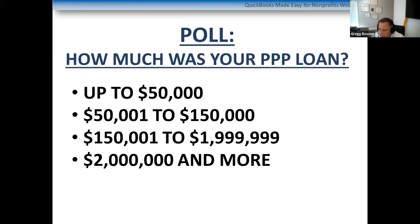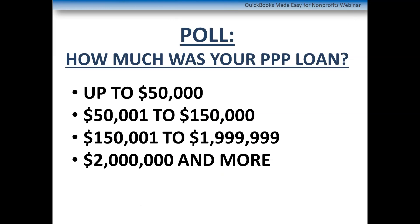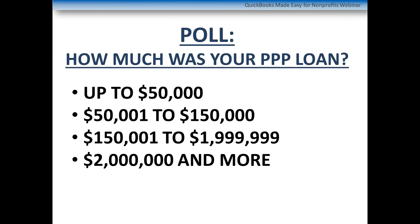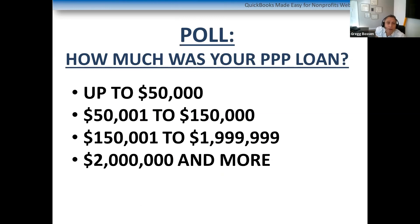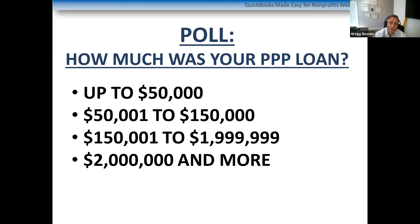We've got 221 people on the call. I want to do a poll: if you're on this call, I'm assuming you got a PPP loan. I want to know how much it was. Is it up to $50,000? $50,000 to $150,000? $150,000 to $1,999,999? Or $2 million or more? We should get most people voting — we'll give it another second.